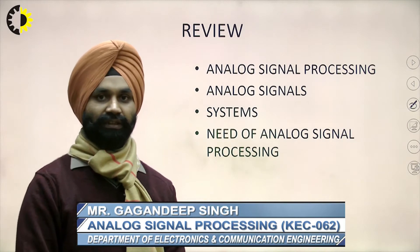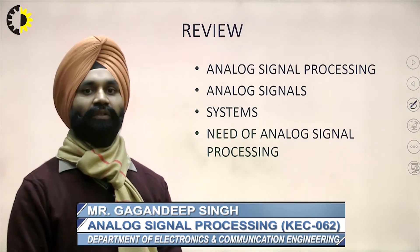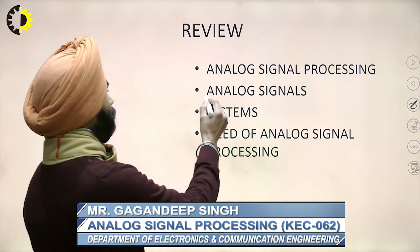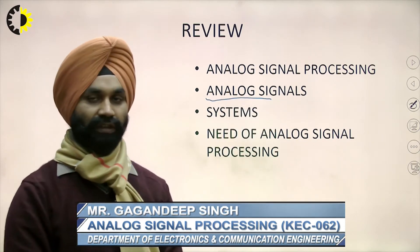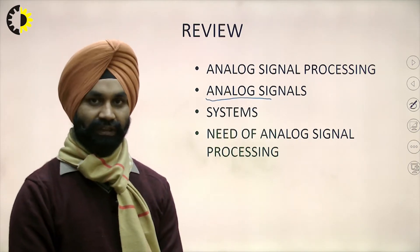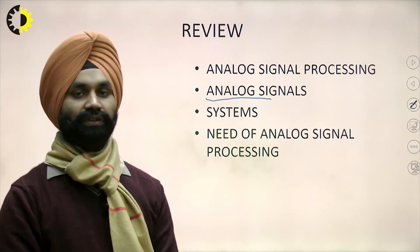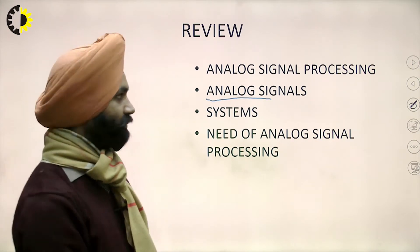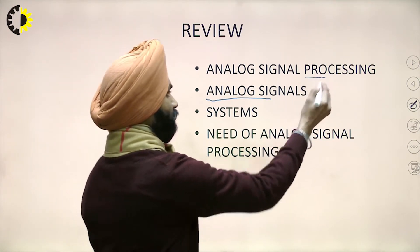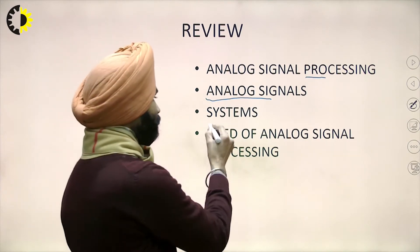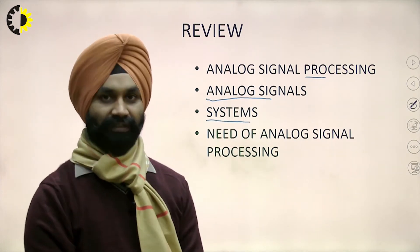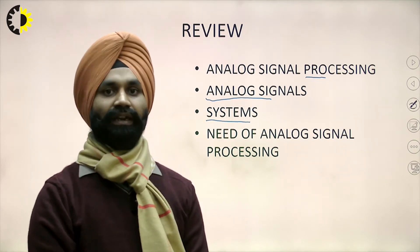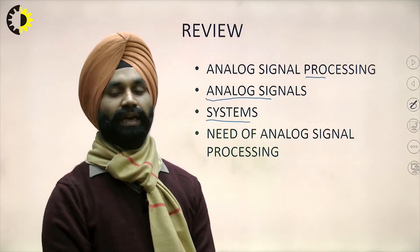In the previous lecture, we have discussed what are analog signals, what are analog signals, the different types of signals, and the difference between analog signals and digital signals. We then had a detailed discussion on analog signals. The second part of analog signal processing is processing which is done through systems, so we discussed the introductory part of a system — what are systems and what systems are used for analog signal processing.